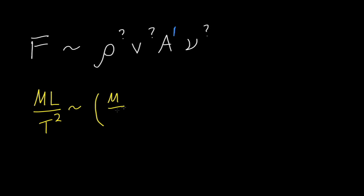Density has dimensions of mass per length cubed, raised to this unknown exponent. Velocity has dimensions of length per time, raised to this unknown exponent. Area has dimensions of length squared, raised to the power 1. We've already figured that out. And kinematic viscosity, now that's the regular viscosity divided by the density. It has dimensions of length squared, per time, raised to this unknown exponent.